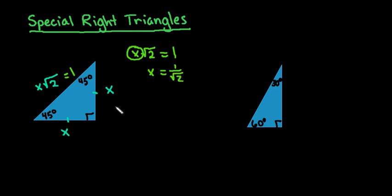If you remember from algebra, you're not allowed to have a radical in the denominator, so we have to rationalize. We multiply by √2/√2, which gives us x = √2/2.